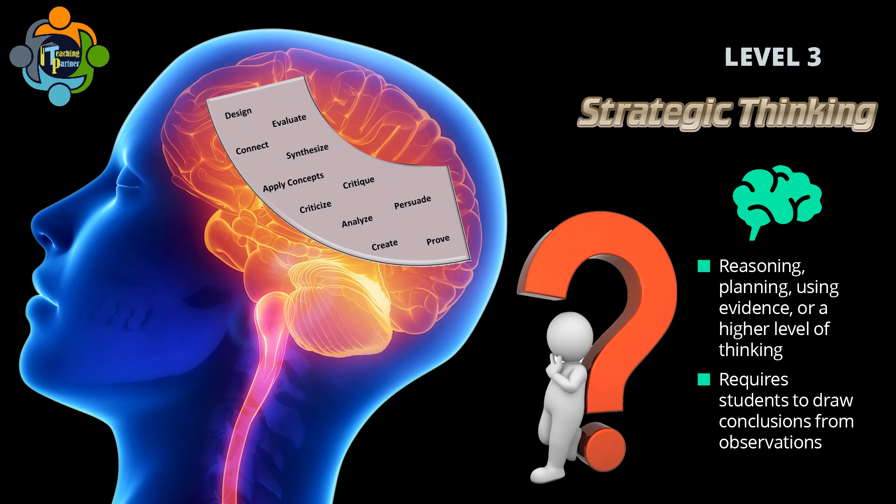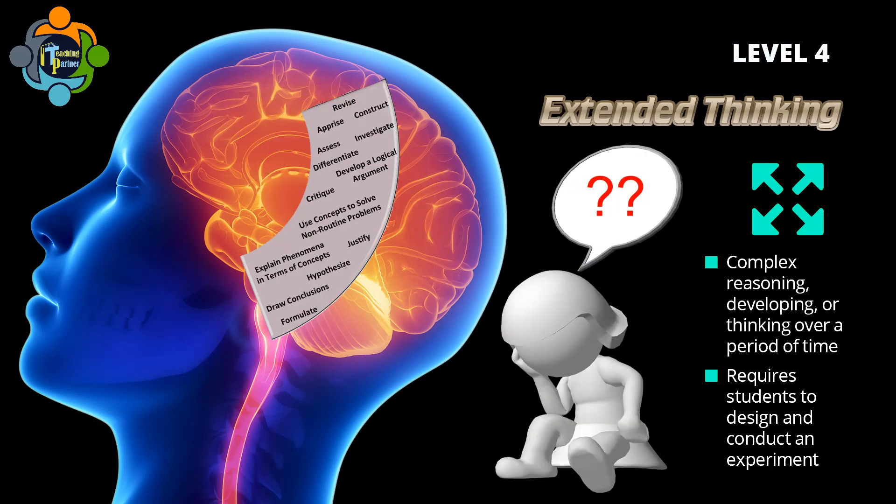Level three is Strategic Thinking. This level requires reasoning, planning, using evidence, and a higher level of thinking. Asking students to explain their thinking is a part of this level. It is more complex and abstract than the previous two levels. Examples include: develop a logical argument, construct, compare, investigate, differentiate, draw conclusions, hypothesize, formulate, and critique.